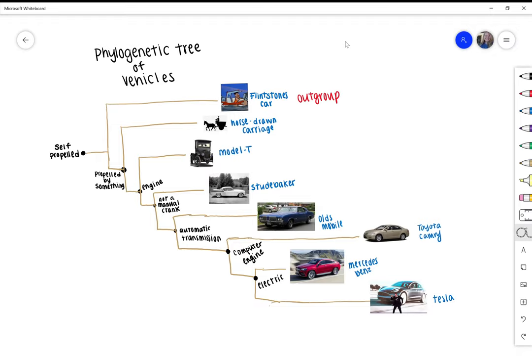They are connected by a common ancestor, which are called the internal nodes. An example of an internal node for my phylogenetic tree would be having an engine.